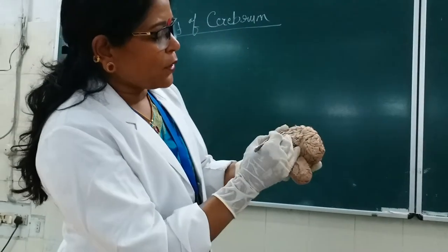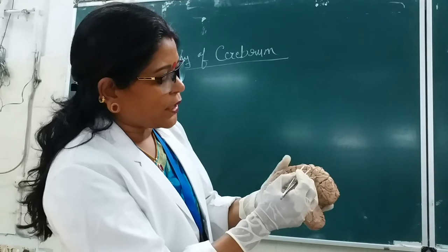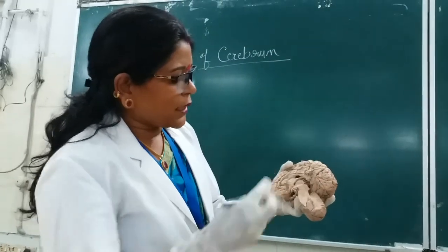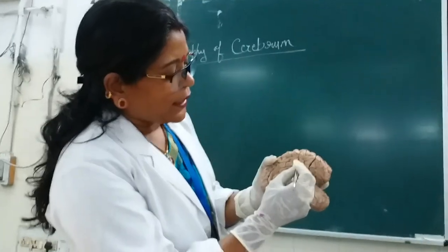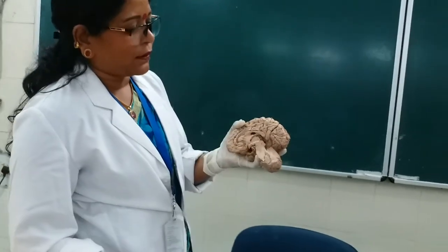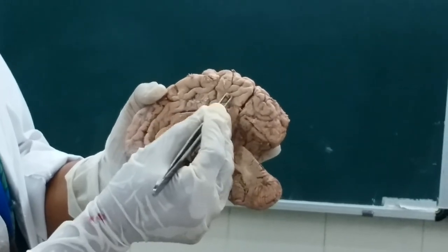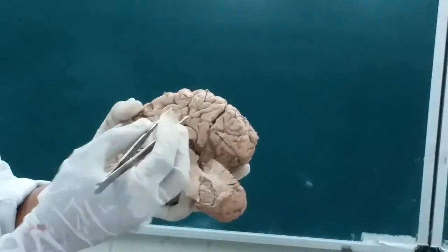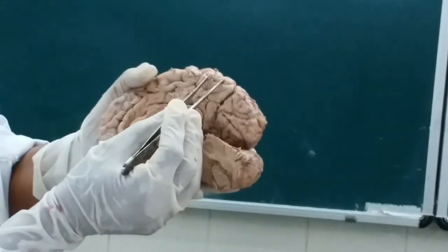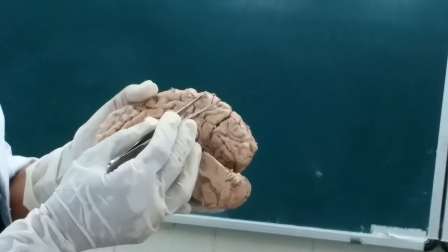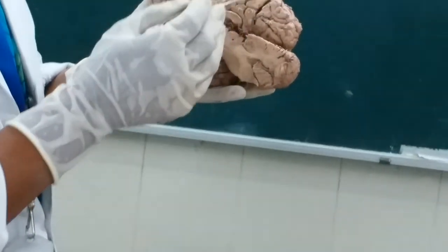Now, the cingulate sulcus runs upwards here, and one part is the paracentral lobule. One more sulcus is present here, that is the suprasplenial sulcus — located just above the splenium of the corpus callosum, a transverse sulcus on the medial surface. The part bounded by this region on the medial surface is known as the pre-cuneus.